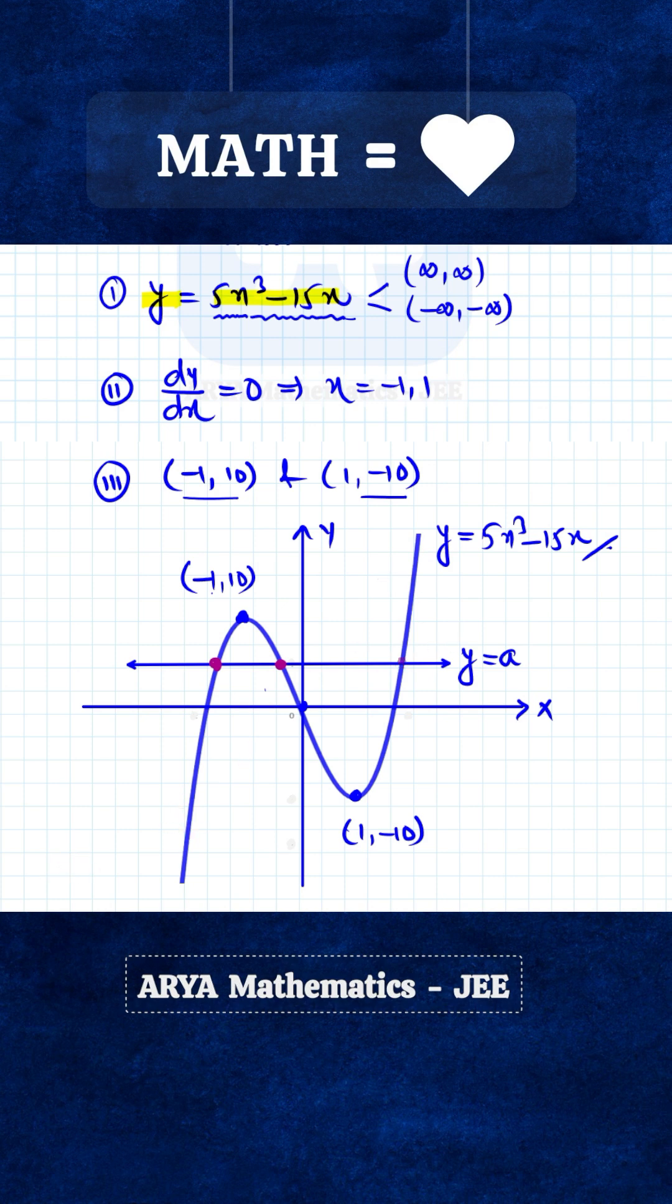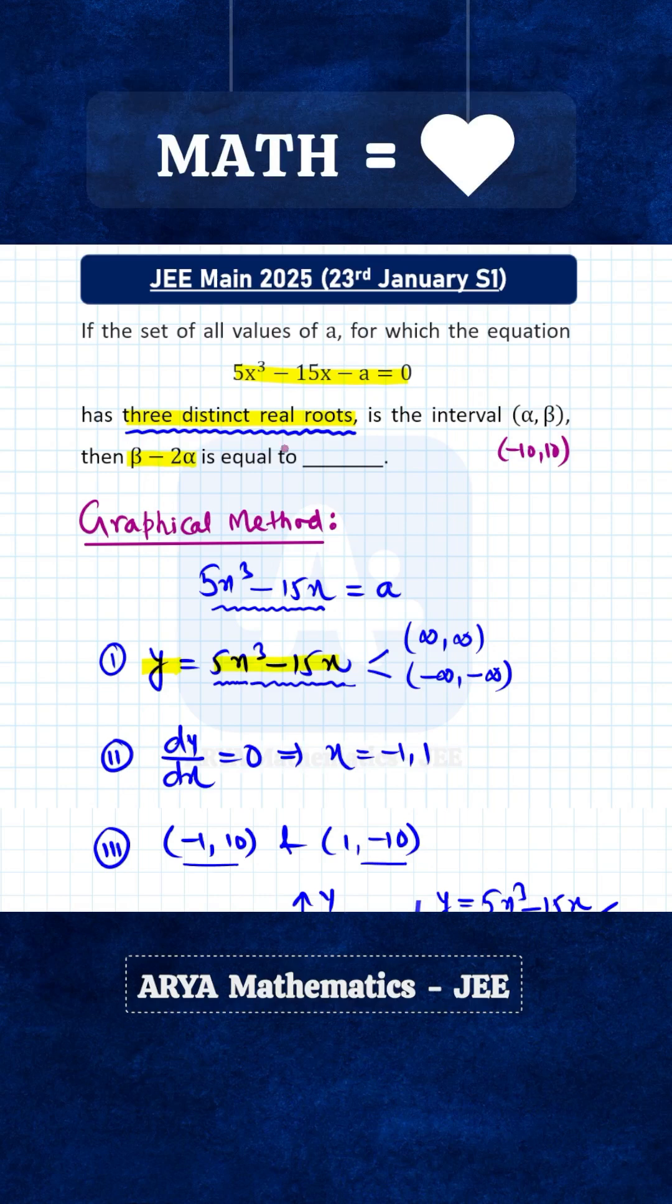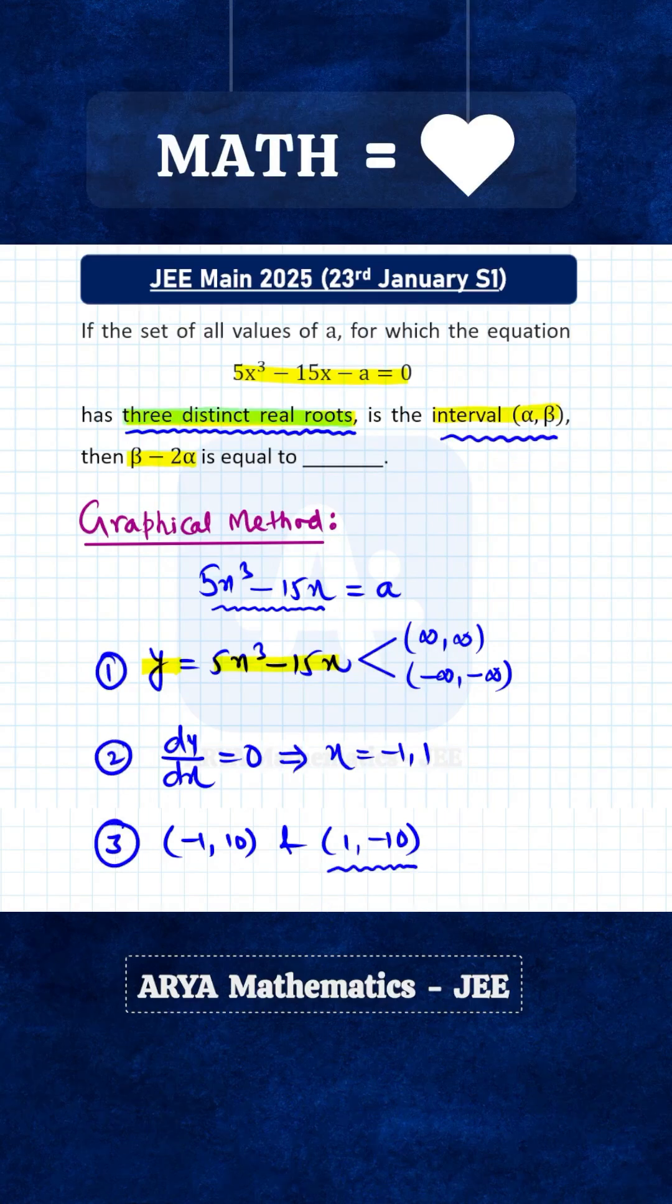So basically, for three distinct real roots, the range for A will be minus 10 to plus 10, and hence beta minus 2 alpha will be 30.